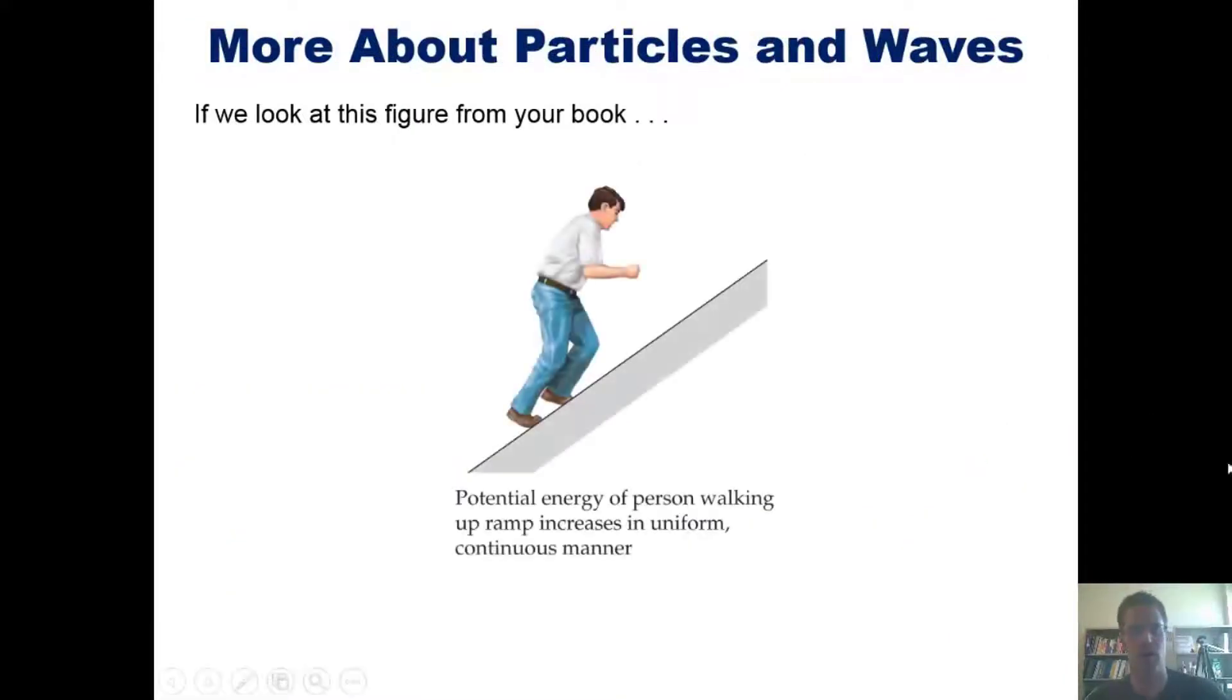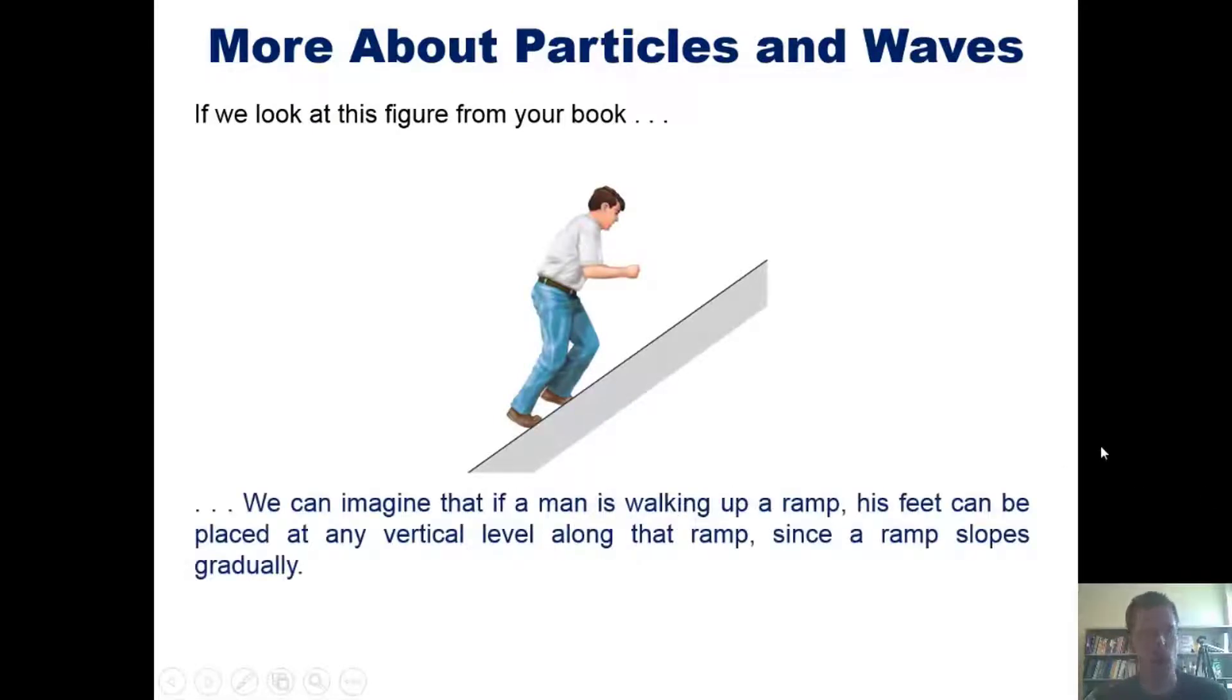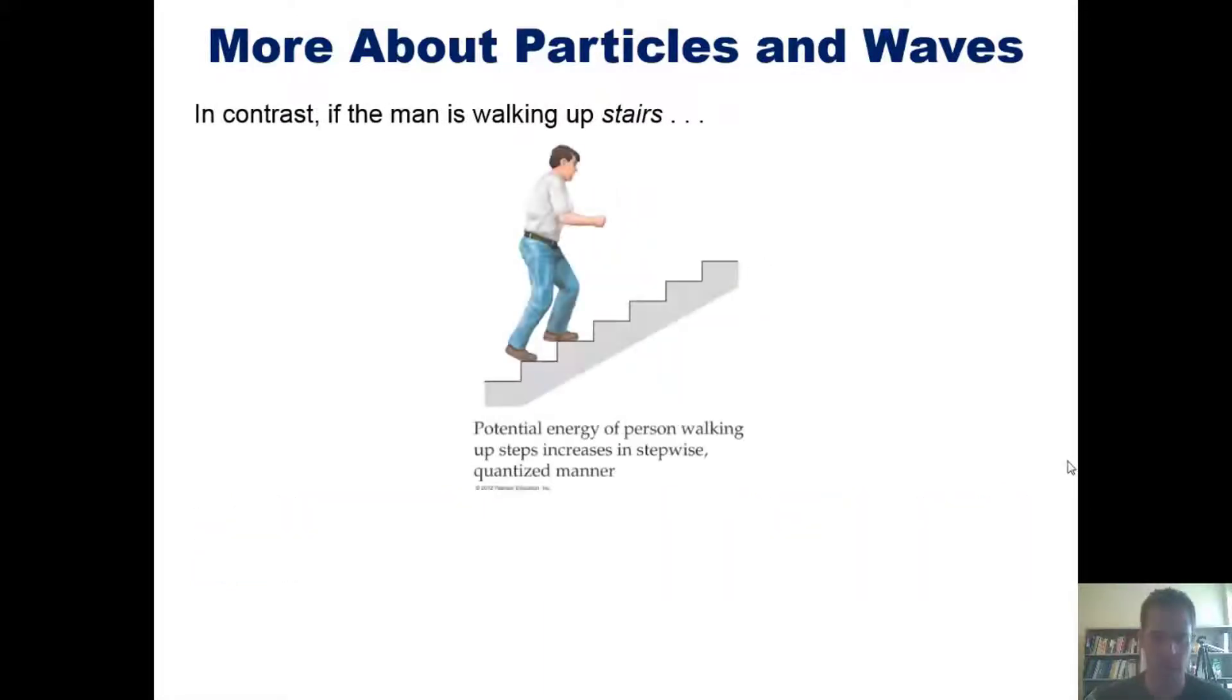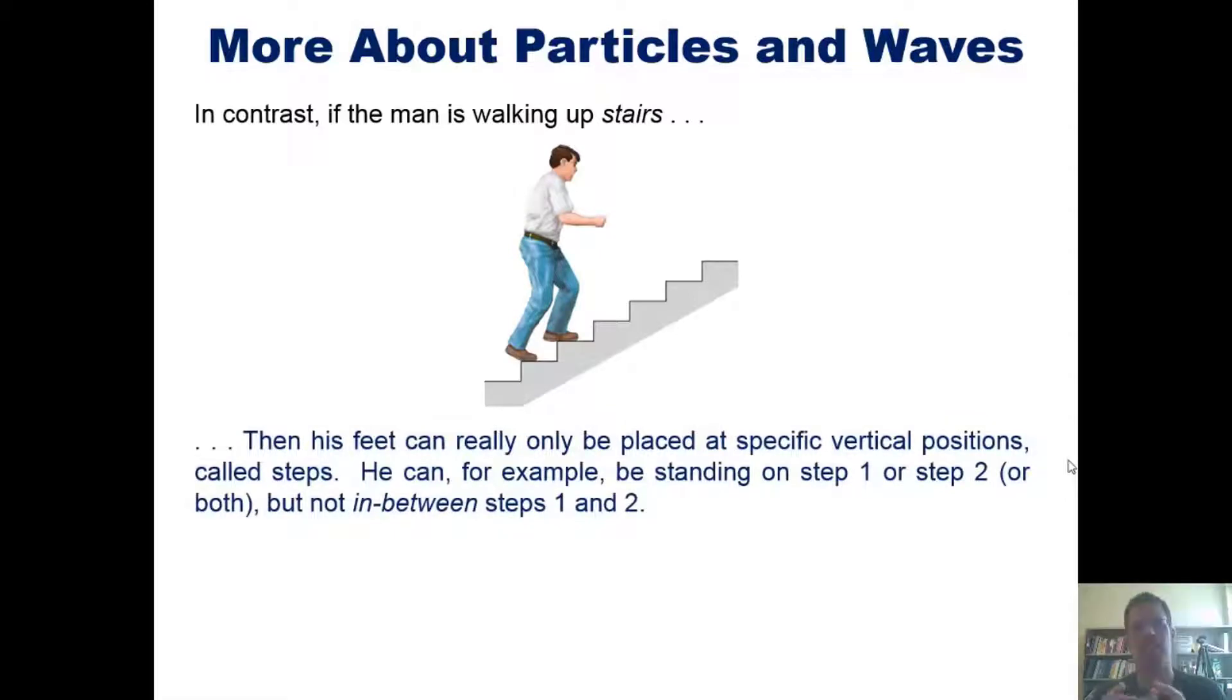Alright, with that said, let's go on. If we look at this figure from our book, we can imagine that if a man were walking up a ramp, his feet can be placed at any vertical level along this ramp since a ramp slopes gradually. However, if we contrast this with a man that's walking up stairs, then his feet can really only be placed at specific vertical positions called steps. He can, for example, be standing on step one or step two, but not in between steps one and two.